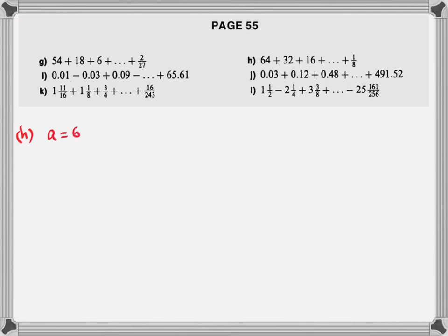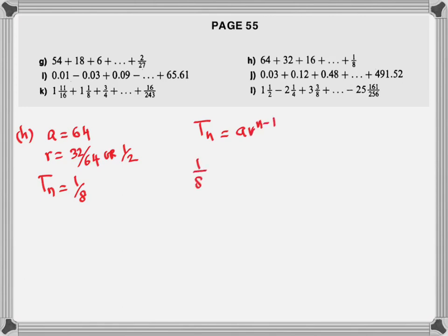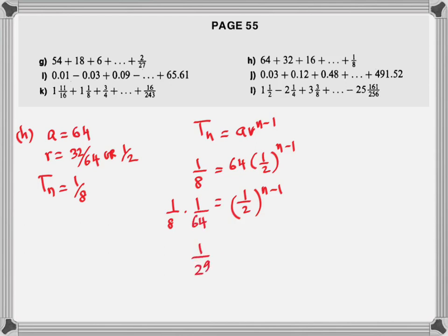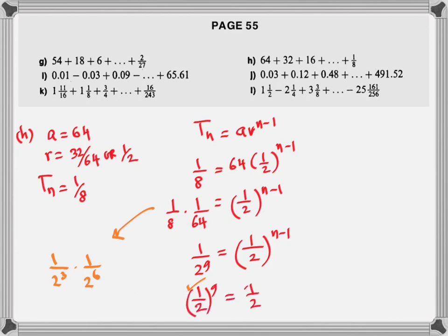Let's look at another example, part H: 64, 32, 16, ... all the way to 1/8. The first term is 64, the common ratio is 1/2, and the term is 1/8. To find the number of terms, 64 is moved to the other side: 1/8 times 1/64 equals (1/2) to the power of n minus 1. Since 8 is 2 cubed and 64 is 2 to the power of 6, this becomes 1 over 2 to the power of 9. Equating the powers since the bases are the same, the value of n is 10.